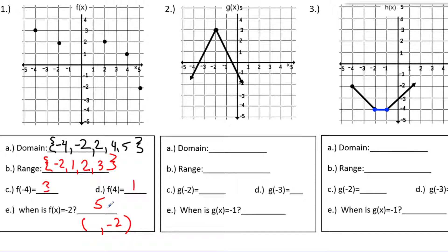Moving on to problem number 2 — same kind of thing, but here's the difference. I can't just make a list of points because the values are connected. For example, there's a point at negative 4 comma negative 1 and at negative 3 comma 1, but all the space in between negative 4 and negative 3 is also part of the domain — like negative 3.5 or negative 3.25 also have points. Because the lines are connected, there are infinitely many points in the domain.